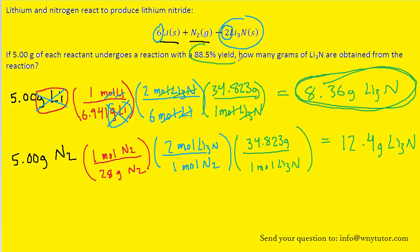Now we know how many grams of lithium nitride would theoretically be produced, but the question states that we only obtained 88.5 percent of what we expected. So we really just have to take 88.5 percent of this number of grams, and that will tell us the actual number of grams that were produced in this reaction.